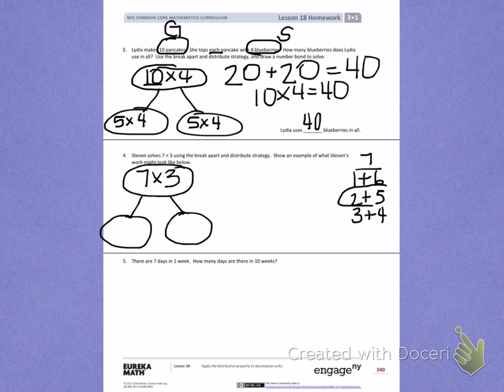The easiest would be 2 and 5 because it's easiest to count by 2's and 5's. So he would have 2 times 3 and 5 times 3. 2 times 3 is 2, 4, 6, plus 5 times 3.